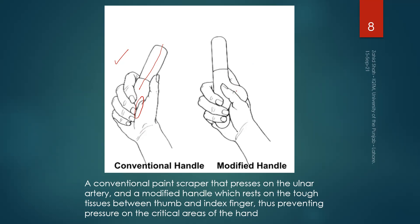Here we have modified the handle by adding a feature to it — the rest of the handle is still straight cylindrical. Now the pressure while using the hand tool will be exerted at a point where the modified handle rests on the tough tissues between the thumb and the index finger, thus preventing pressure on the critical areas of the hand. A slight modification in the shape of the handle results in pain-free use of this tool.